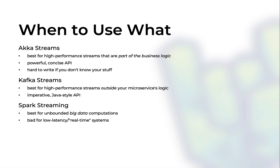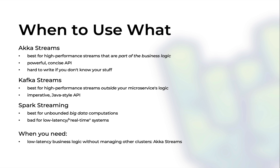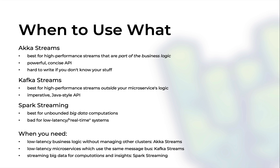With Spark Streaming we've removed data bounds, so you can process an infinite amount of data. However, at the moment of this recording, Spark Streaming is bad for actual application logic and low latency, so you might want to use it as a data aggregator. To summarize: use Akka Streams when you need a high-performance, low-latency piece of logic that sits at the core of your application; use Kafka Streams when you need many low-latency high-performance microservices using the same message bus; and use Spark Streaming when you need to stream big data to compute things and gather constant new insights. As a bonus, everyone works with Kafka, so you can add it to your setup no matter which tool you pick.